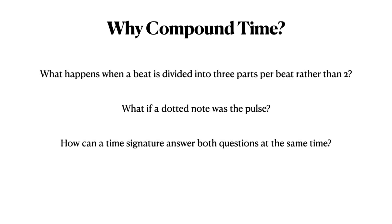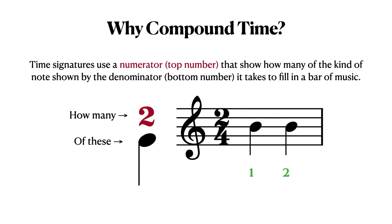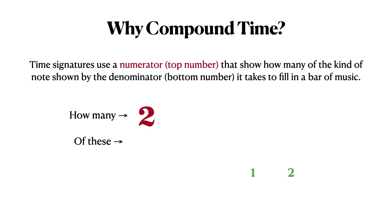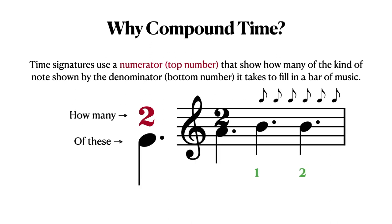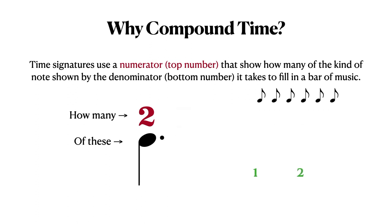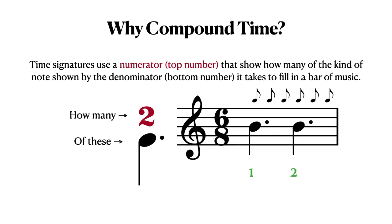But what would happen if we divided the beat into 3 parts rather than 2? What if we were to choose the dotted note as the beat? As we have seen, the top number shows you how many of the bottom kind of note there are in the bar. In 2/4 time, there are 2 quarter notes. If we were to expand the duration of the notes by dotting them, we would find 2 dotted quarter notes may also fill a bar. Since 3 8th notes fill in the duration of a dotted quarter note, 6 8th notes will fill in the duration of the entire measure. Therefore, we use the time signature 6/8 to represent 2 dotted quarter notes per measure.